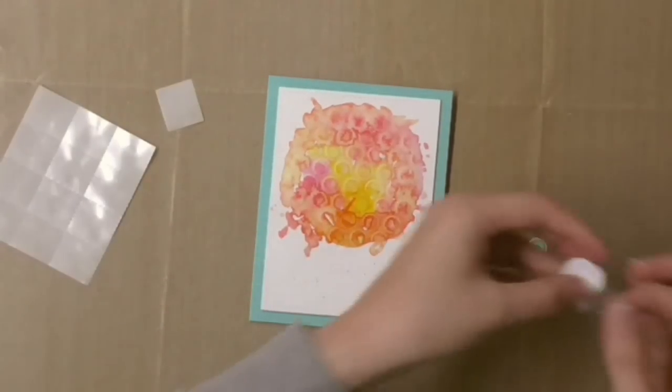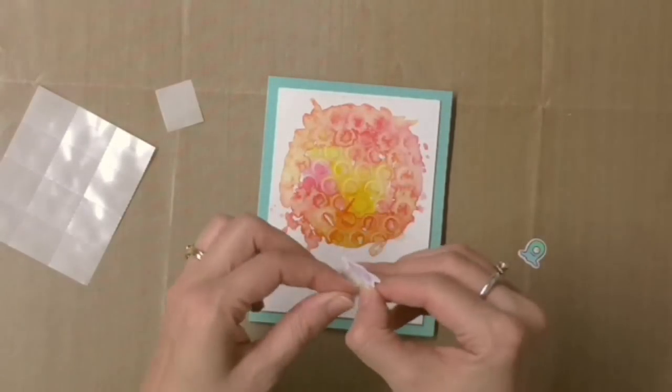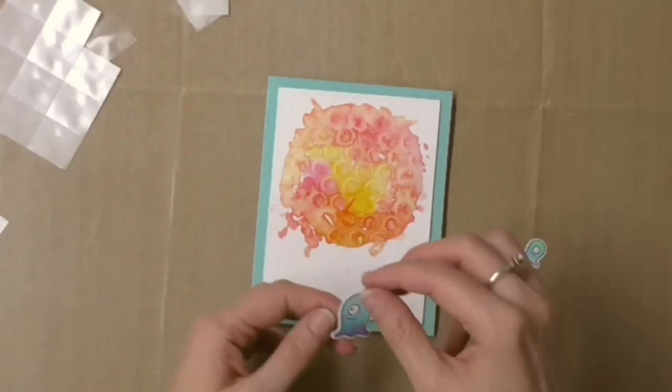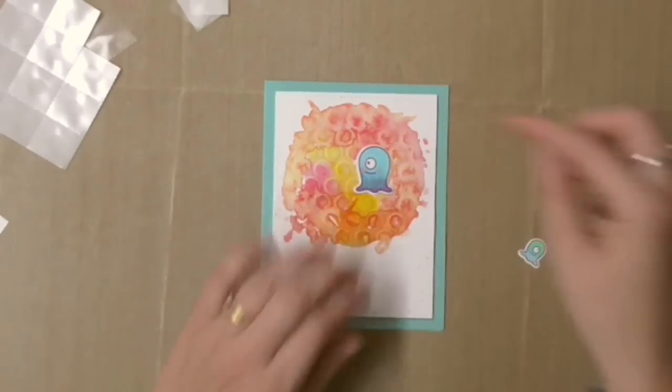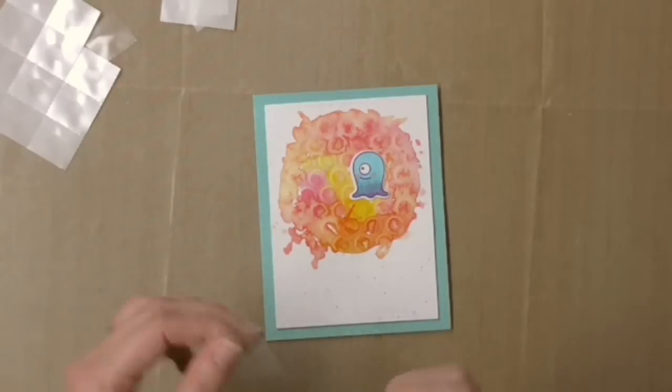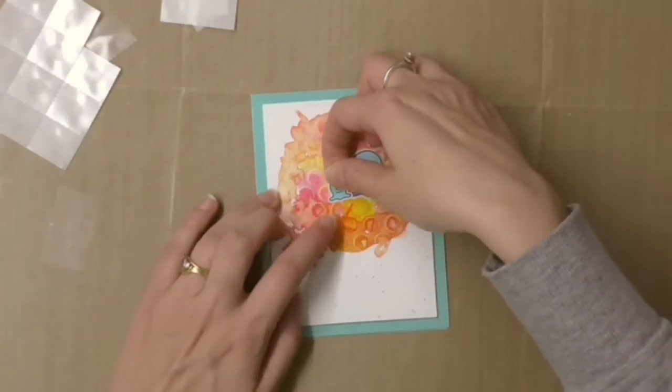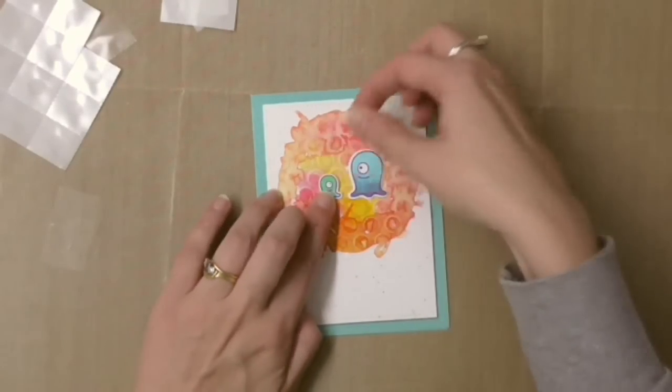Now let's stick these little guys on and I'm using some glue dots for this today. He's going to go right here, and the little guy next to him. The glue dots I think are easier whenever you have a textured surface underneath.